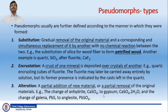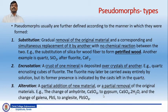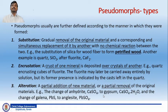Pseudomorphs are usually further defined according to the manner in which they are formed. There are basically three types of processes in which a pseudomorph may be formed. The first one is substitution. In substitution, what happens is the gradual removal of the original material and a corresponding simultaneous replacement of it by another mineral.